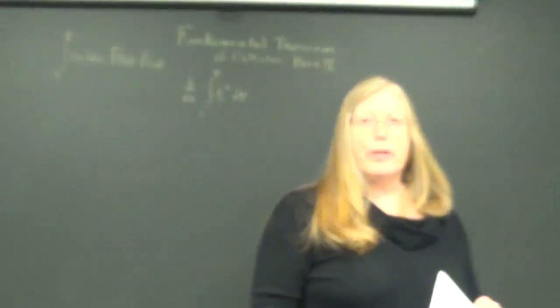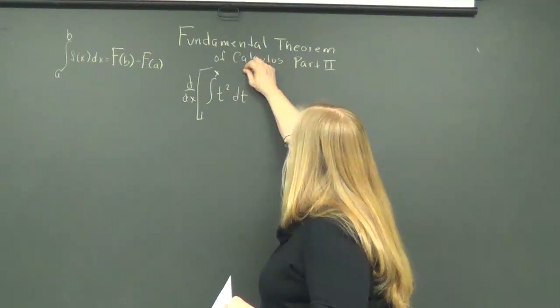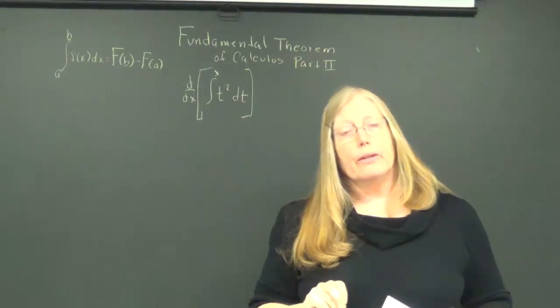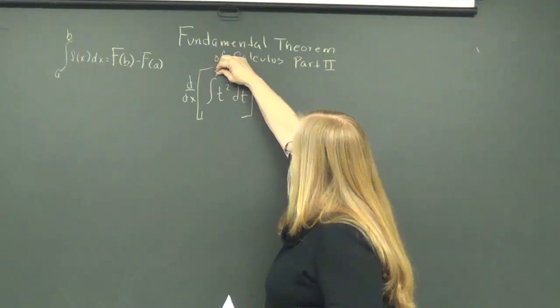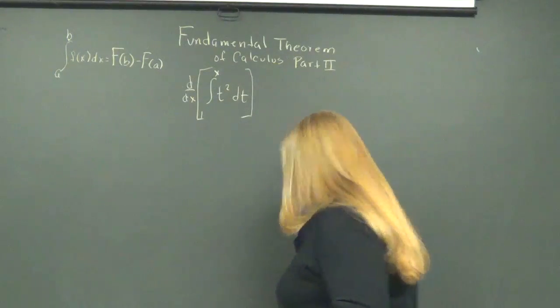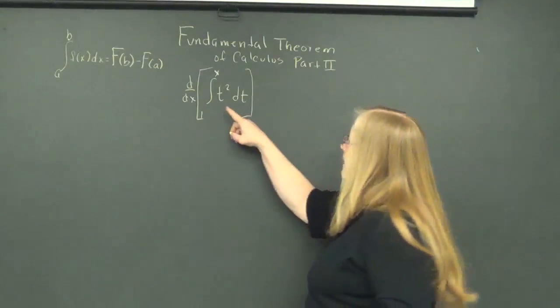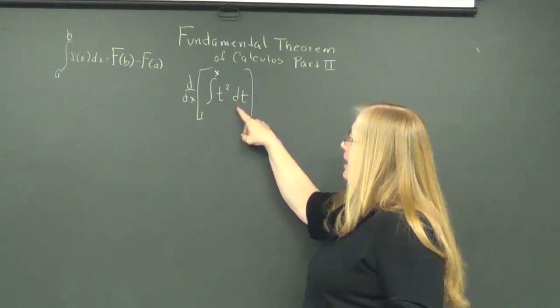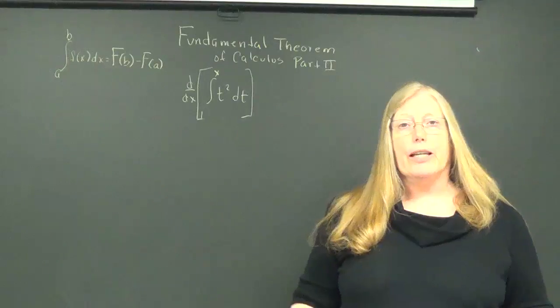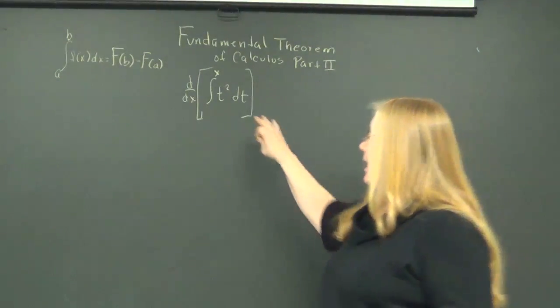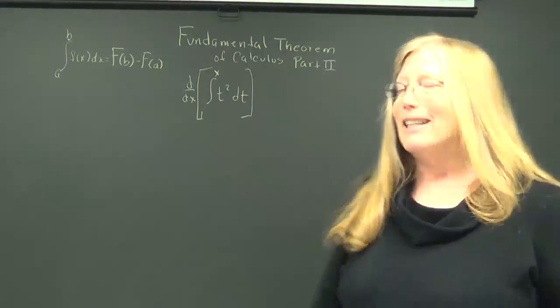So as I said, I was wondering how to find the derivative of an integral, so I'm going to take an integral, and this integral is a definite integral, and then I'm going to find the derivative of it. Notice, I am taking the integral from 1 to x, and I'm not using x as the variable of integration. I'm using another variable of integration, because after I take the integral, I'll be substituting in x.